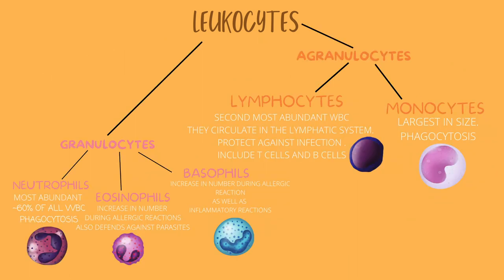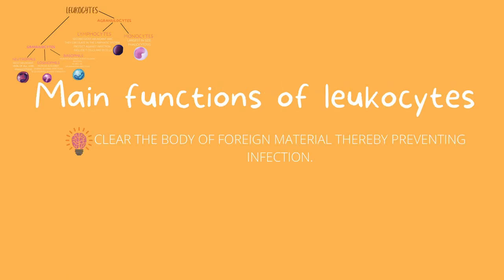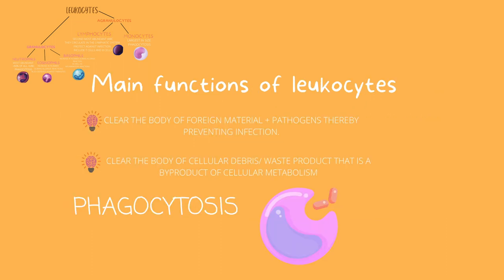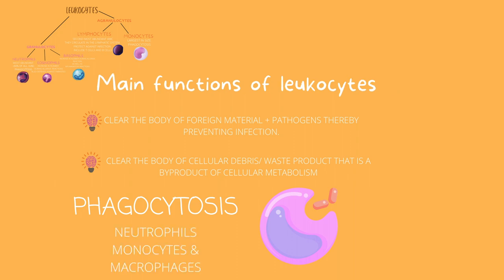The main functions you must remember about the white blood cells is that they clear the body of foreign material that is potentially harmful. They also clear out any cellular debris and metabolic byproducts that the body itself produces. In other words, they clear out any harmful material that comes into the body, but they also clear out any waste product developed in the body. And of course, phagocytosis is extremely relevant — the leukocytes that engage in phagocytosis are the neutrophils and the monocytes or macrophages.